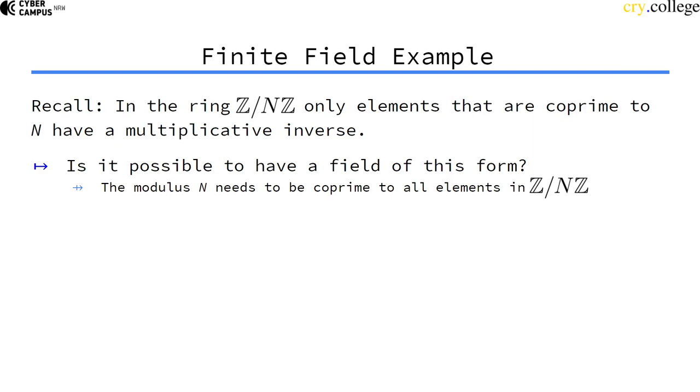Let's recall the ring of residual classes modulo n. Within this ring, the elements that have an inverse are the elements that are co-prime to the modulus n.